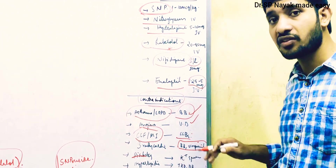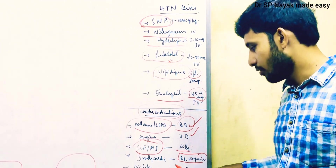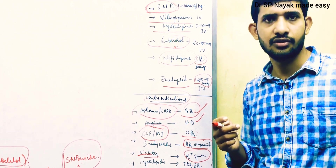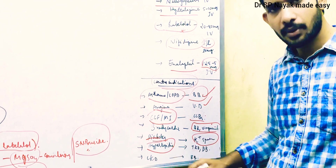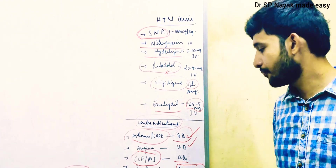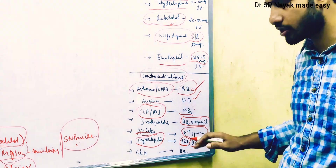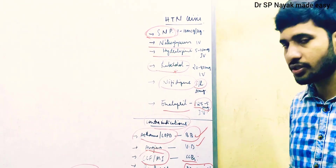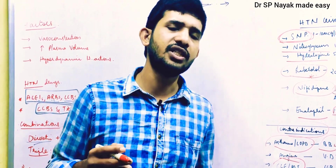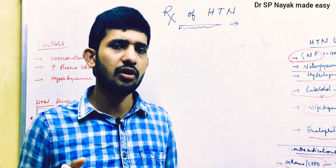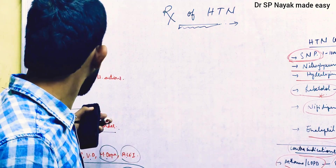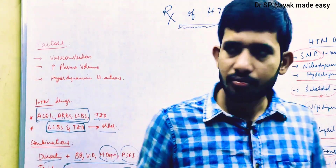In diabetes mellitus, potassium-sparing diuretics are strictly contraindicated; they can be given along with loop or thiazide diuretics. In hyperlipidemia, thiazide diuretics cause hyperlipidemic reactions and are strictly contraindicated, and beta blockers are also contraindicated in hyperlipidemic conditions. In CKD, beta blockers are generally strictly contraindicated, though metoprolol — which has vasodilatory properties — can sometimes be given in CKD patients.